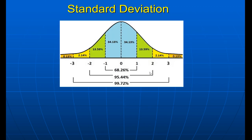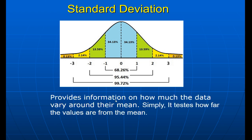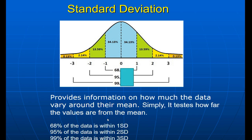Returning to this curve — the standard deviation concept provides how much the data varies around the mean. How far do the values differ from the mean? Keep in mind: 68 — one standard deviation; 95 — two standard deviations; 99 — three standard deviations. 68, 95, 99.